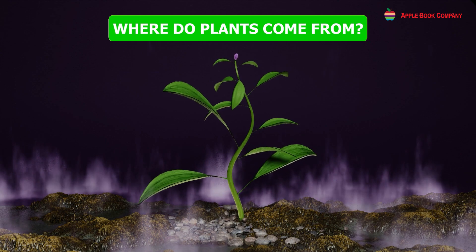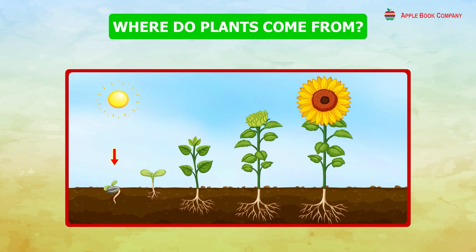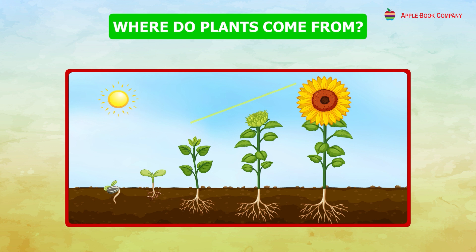Where do plants come from? Most plants come from seeds. When a seed gets enough water, sunlight and air, a baby plant comes out of it. The baby plant grows and becomes a full plant. Have you seen any seed?